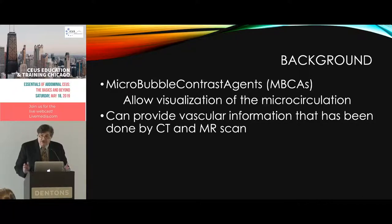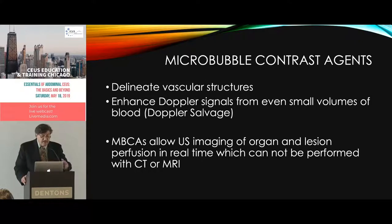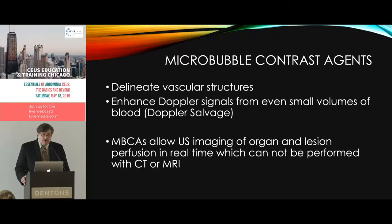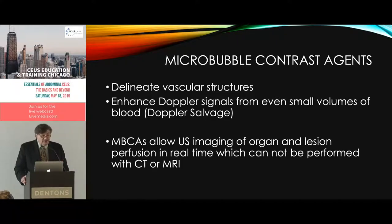In CT and MR, we always use contrast when we want to characterize things, and the same should be true of ultrasound. We would never try to characterize something on CT or MR without contrast. These agents allow us to delineate vascular structures and enhance Doppler signals even in small volumes of blood — called Doppler salvage. This is where agents were initially used before we had pulse inversion and harmonics.